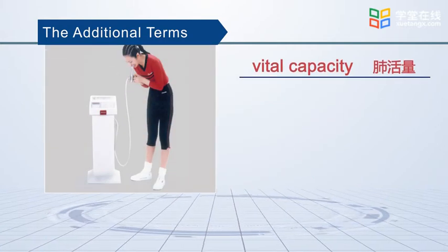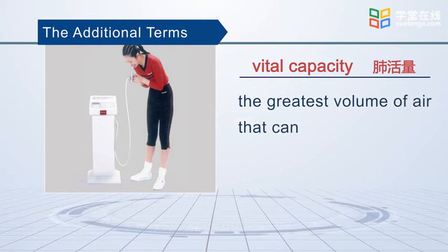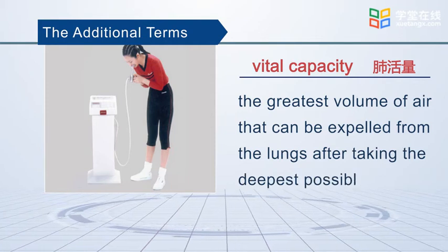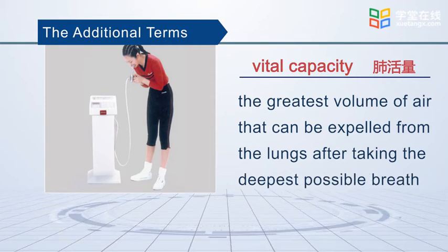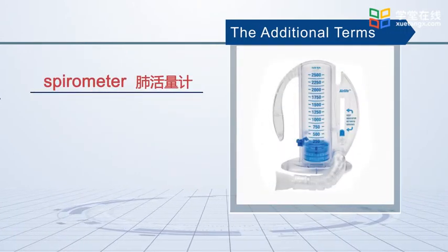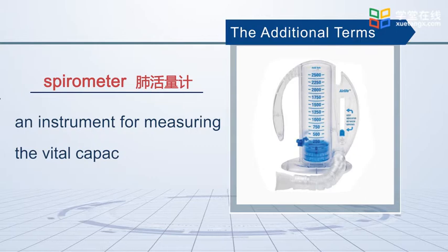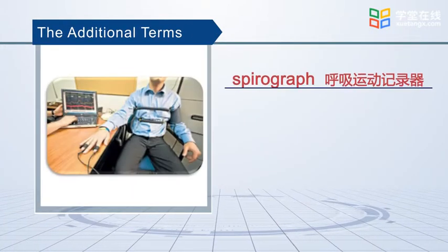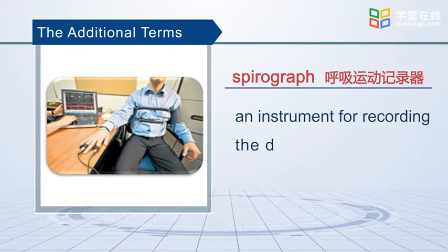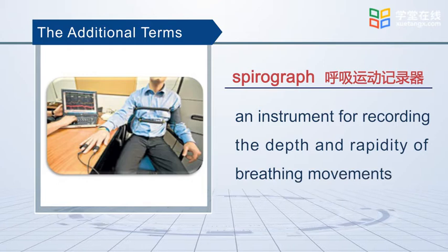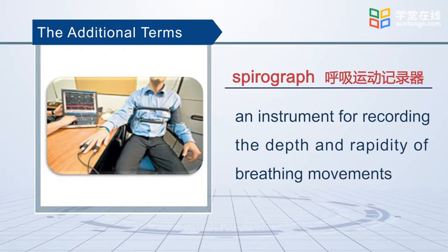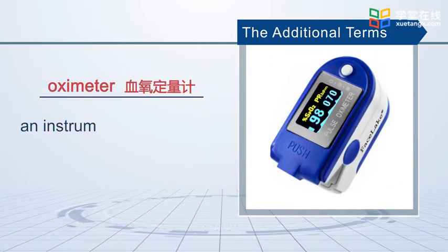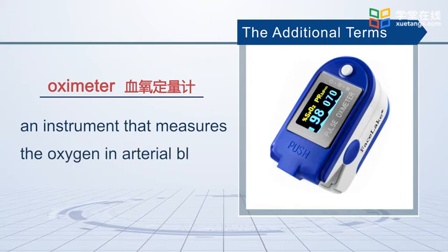Vital capacity is the greatest volume of air that can be expelled from the lungs after taking the deepest possible breath. Spirometer is an instrument for measuring the vital capacity of the lungs. Spirograph is an instrument for recording the depth and rapidity of the breathing movements. Oximeter is an instrument that measures the oxygen in arterial blood.